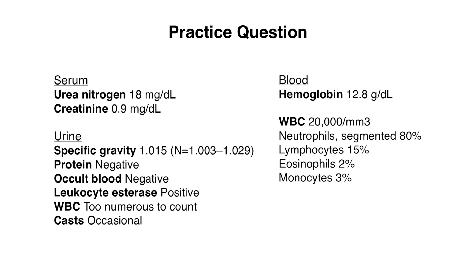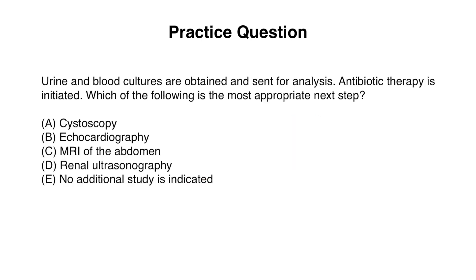Looking at the lab results: BUN and creatinine are normal. Urinary studies show positive leukocyte esterase as well as white blood cells, which makes sense since leukocyte esterase is an enzyme released by leukocytes. Hemoglobin is normal, but the white blood count is elevated with neutrophils as the predominant leukocyte. Urine and blood cultures are obtained and sent for analysis, and antibiotic therapy is initiated. Which of the following is the most appropriate next step?